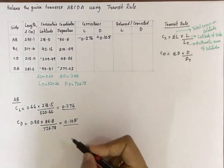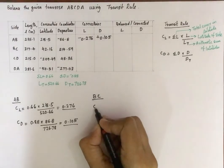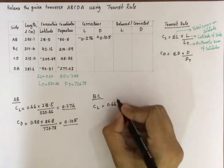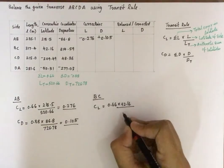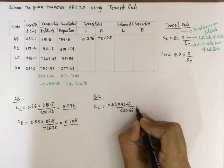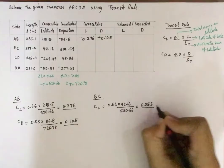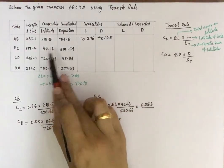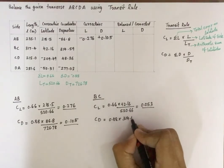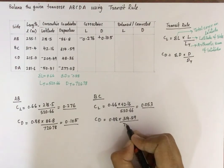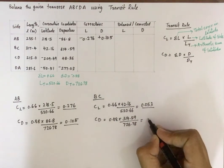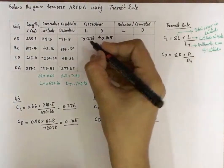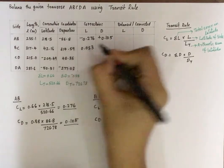For side BC, the correction to latitude is 0.66 multiplied by the latitude of BC (42.16), divided by LT (520.66), giving 0.053. The correction to departure is 0.88 multiplied by the departure of BC (314.59), divided by DT (726.78), giving 0.380.